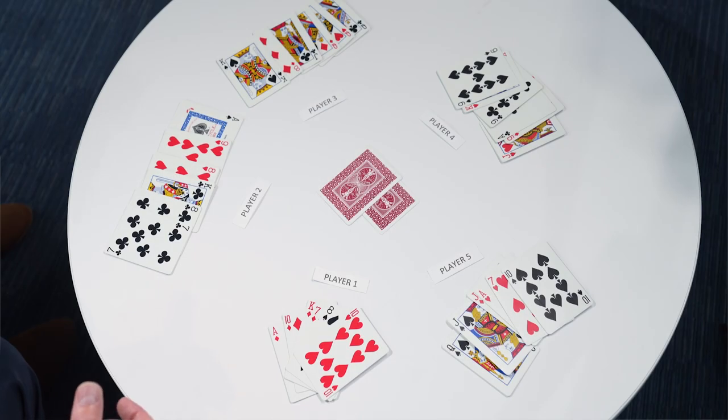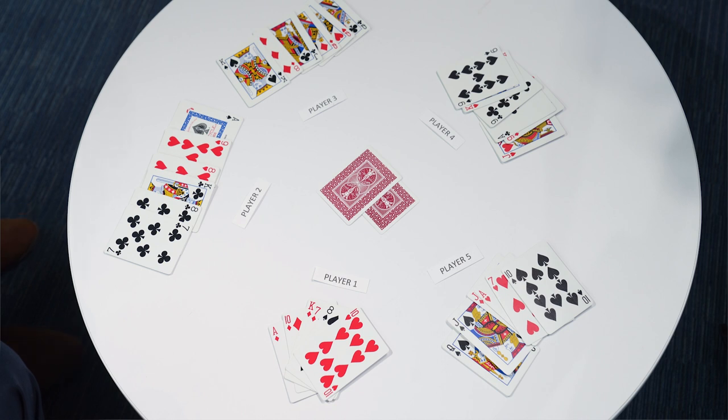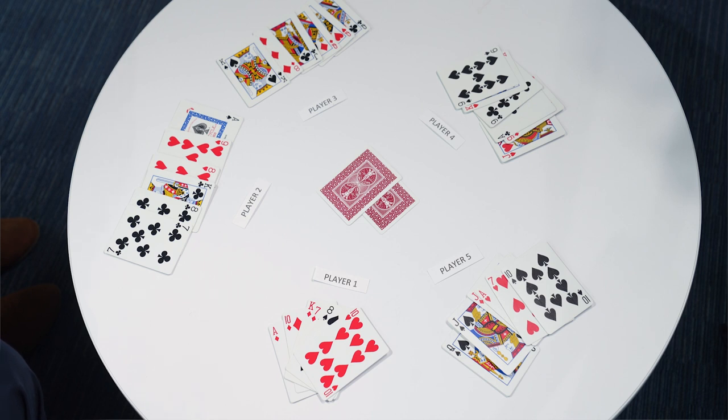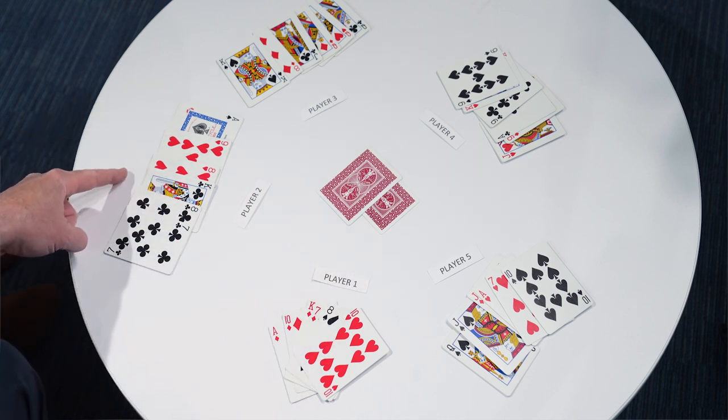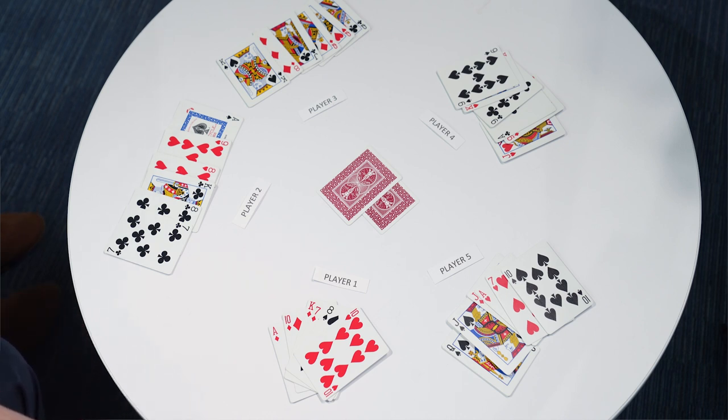Player 1 is the dealer for this hand. The blind is offered to each player, starting to the left of the dealer. Ultimately, there are going to be 2 players against 3 players. The purpose of the blind is to offer the 2-player team somewhat of an advantage to help them in their scoring. Player 1 dealt. Player 2 has the first option to pick the blind, which are the 2 cards in the middle of the table. The person who picks the blind must be confident enough that they and their partner are going to be able to accumulate 61 points.